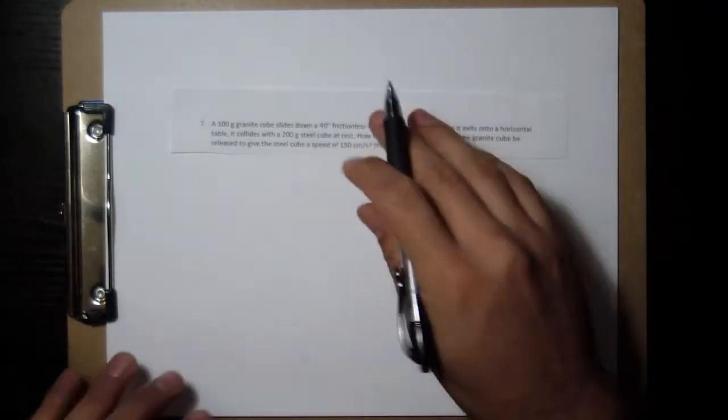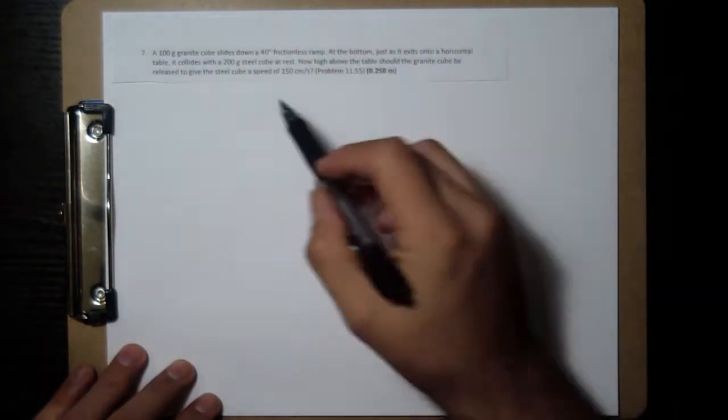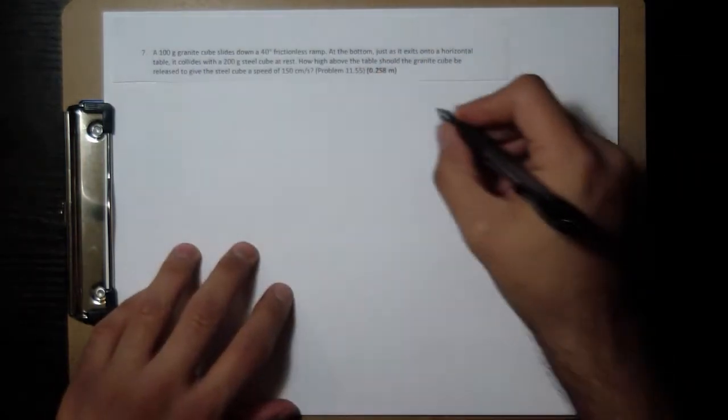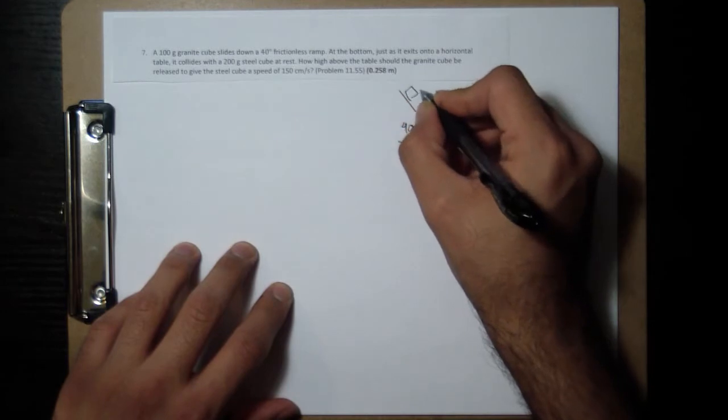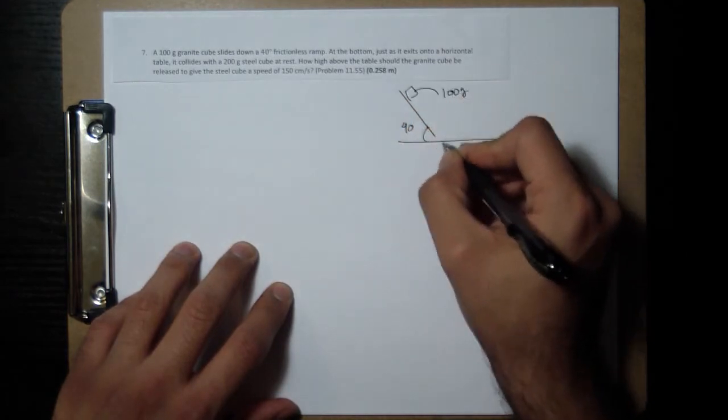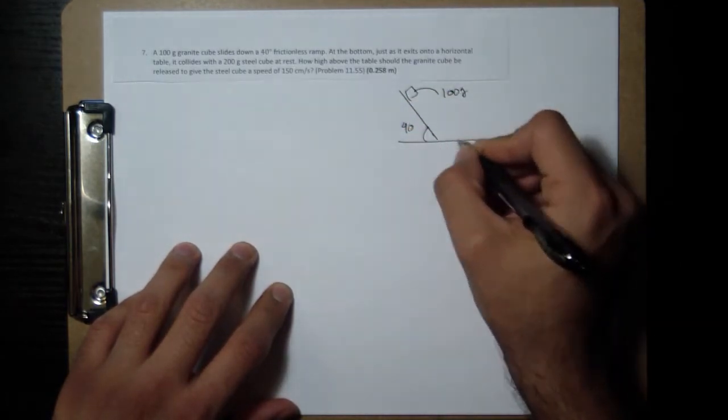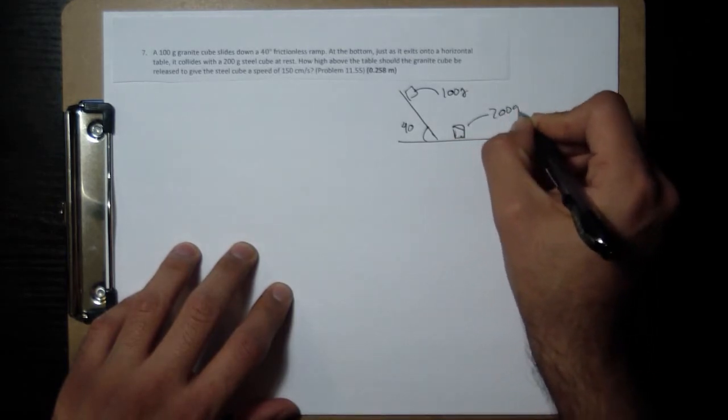This problem is very similar to number four in this setup, although it's asking for something different in the end. So let's first draw a picture. You have 40 degrees, you have a cube up here, 100 grams. It's going to come down, start sliding this way, and then hit another cube of 200 grams.